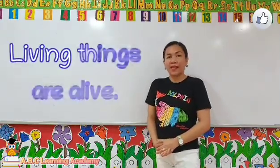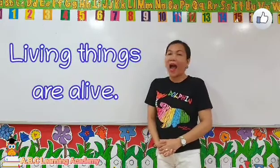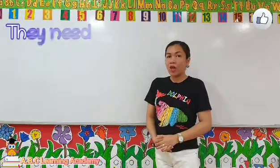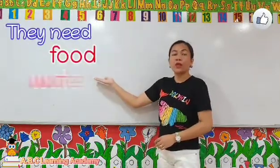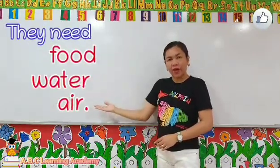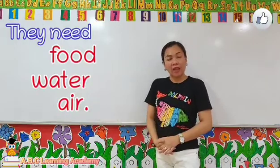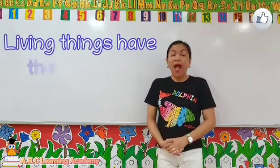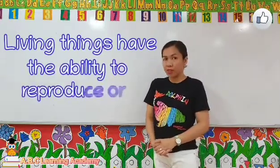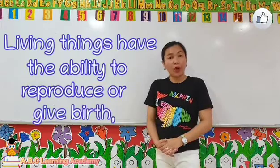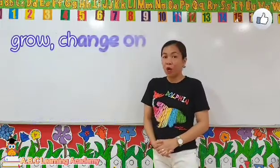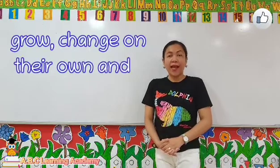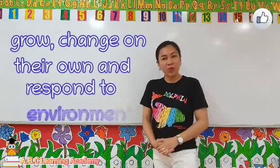These are the things that are alive. They need food, water and air to stay alive. Living things also have the ability to reproduce or give birth, grow, change on their own, and respond to their environment.